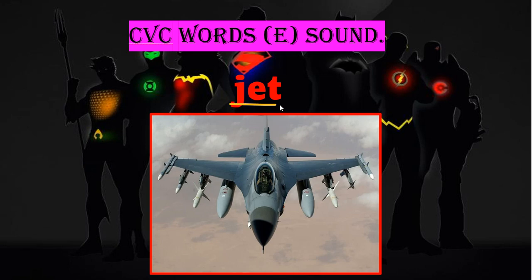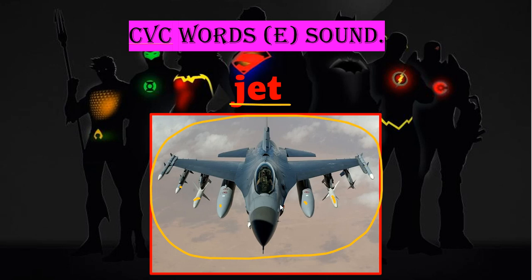Next, we have JET. This looks like an airplane, but it is called a jet — specifically a jet plane. A jet plane is equipped with missiles or bombs and is used for military missions or in case of war. Jets are very fast.